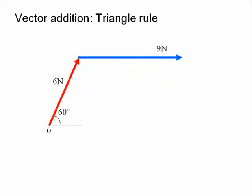Here, the 9N vector is slid up the page so that its tail meets the head of the 6N vector. The resultant vector r is then obtained by joining the tail of the 6N vector to the head of the 9N vector as shown.